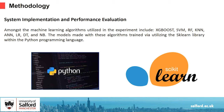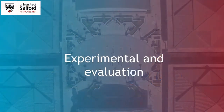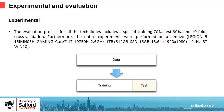Amongst the machine learning algorithms utilized in the experiment are XGBoost, SVM, RF, KNN, ANN, LR, DT, and NB. The models made with these algorithms were trained utilizing the Scikit-learn library within the Python programming language. With a training split of 70% and testing split of 30%, and algorithm evaluation, we have used the scikit-learn library.